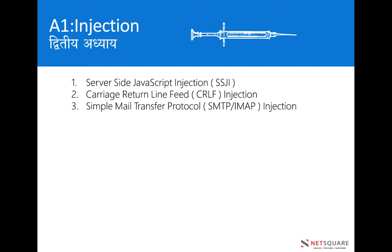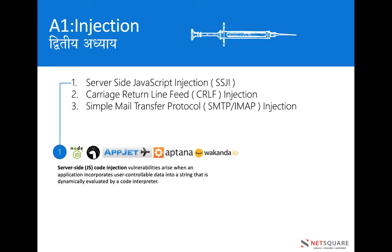What is SSJI? SSJI vulnerability arises when inputted data incorporates user-controllable data into strings that are dynamically involved on the server side and interpreted or executed there. This may involve Node.js, Appeta, Wakanda.io, AppJet, and Deno. When the server performs operations based on such a language and you are able to inject code into that server-side function, it is called server-side JavaScript injection.